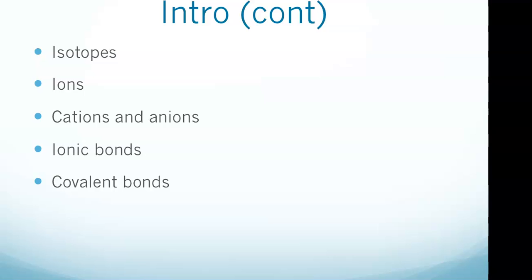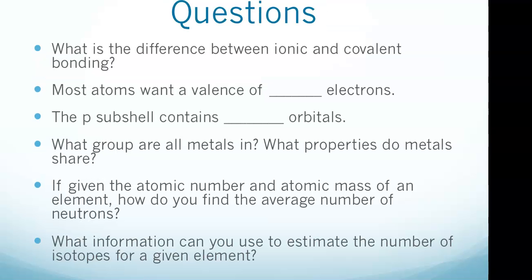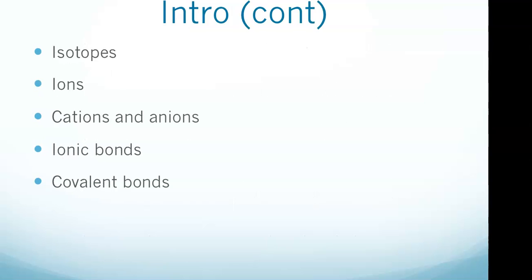Many organic compounds such as carbohydrates result from covalent bonding. The question is: what is the difference between ionic and covalent bonding? With ionic bonds, we have two ions with opposite charges, whereas with covalent bonding, each atom shares a pair of electrons.